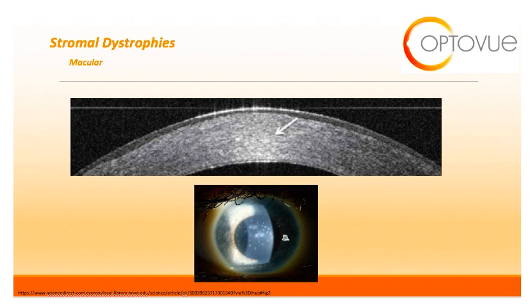Next we have macular dystrophy, another stromal dystrophy. Macular dystrophy appears as gray-white stromal opacities with poorly defined edges, extending from limbus to limbus with cloudy intervening spaces. OCT will show clearly defined, separated hyper-reflective foci in the central cornea with generalized hyper-reflectivity of the central cornea.